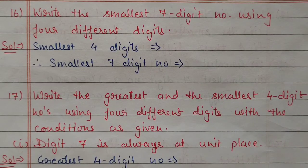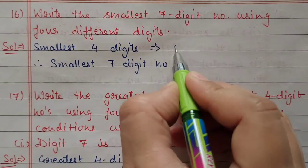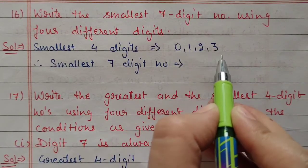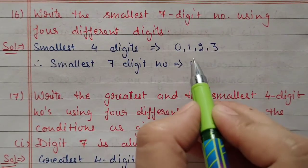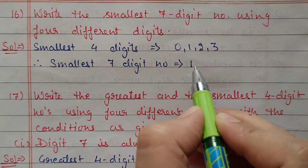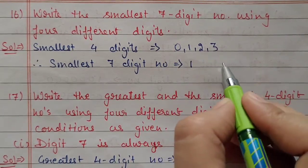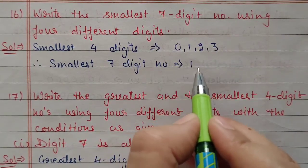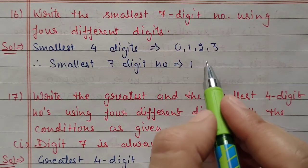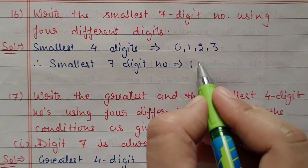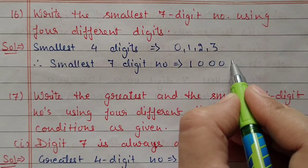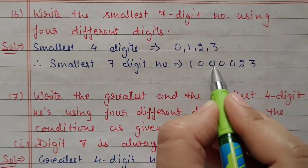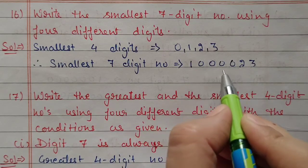Next question number 16: write the smallest 7-digit number using 4 different digits. We take the smallest 4 digits: 0, 1, 2, and 3. To make the smallest 7-digit number, the first place is filled with 1 because we cannot keep 0 at the leftmost place. The last two places are filled with 2 and 3. Remaining in between we have more places to fill with 0. So we write 1, then four zeros, then 2 and 3, giving 1000023.